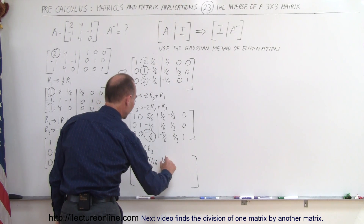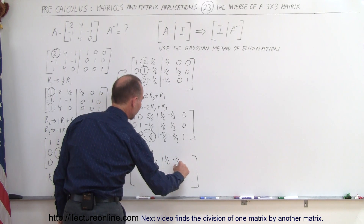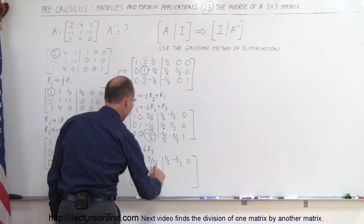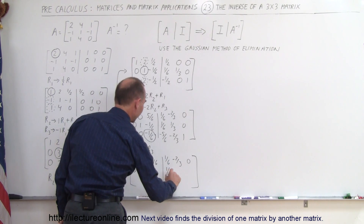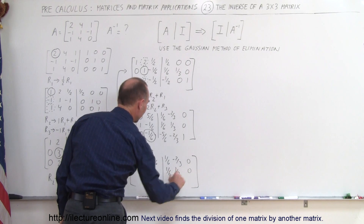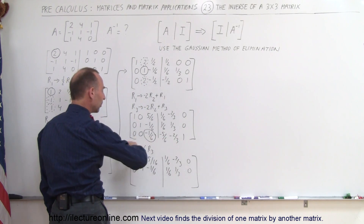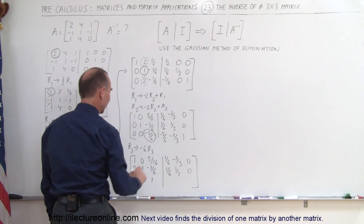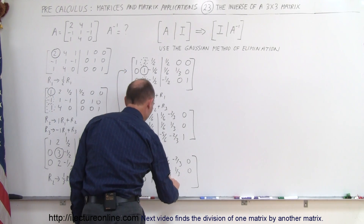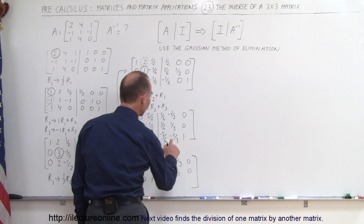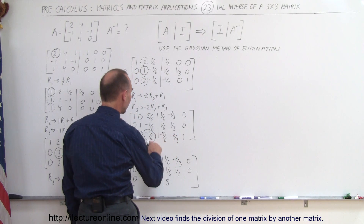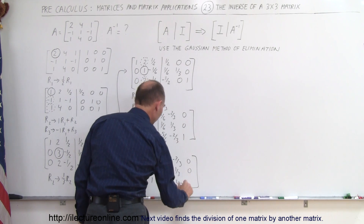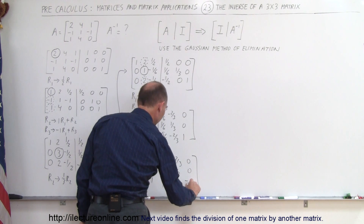Now we need to turn the third column pivot into a 1. We do that by taking the third row and multiplying it by negative 6. The first row doesn't change: 1, 0, five sixths, one sixth, negative two thirds, 0. The second row: 0, 1, negative one sixth, one sixth, one third, 0. The third row multiplied by negative 6 gives: 0, 0, 1, 5, 4, negative 6.